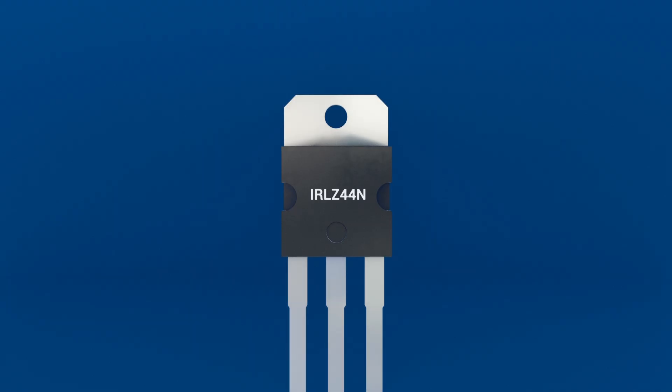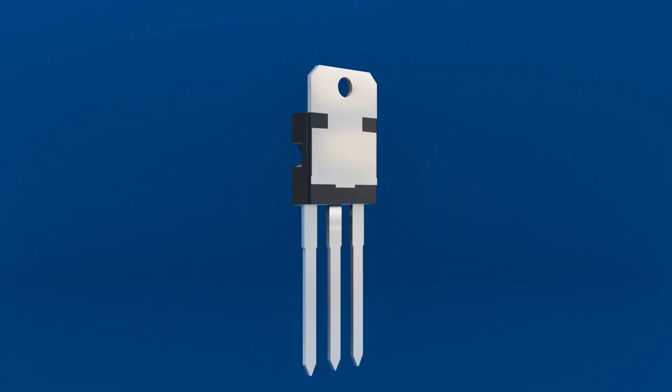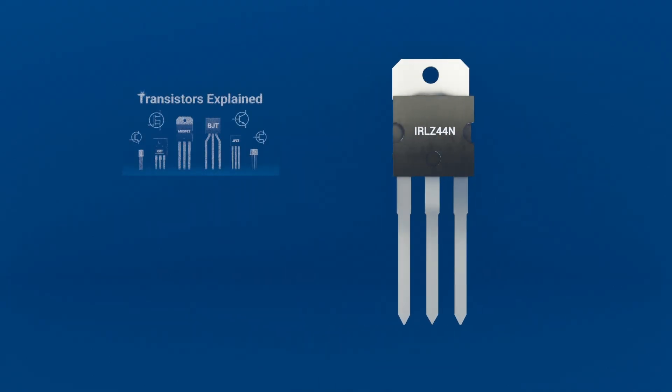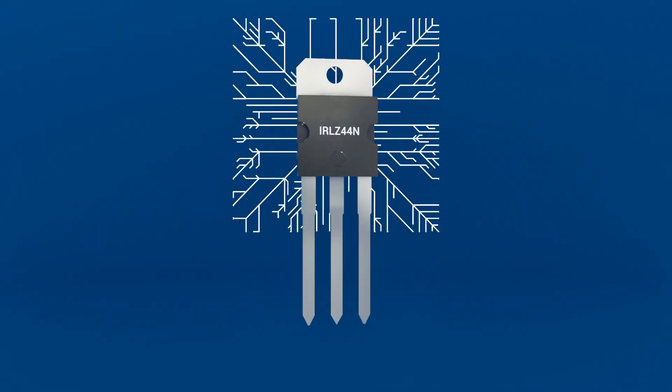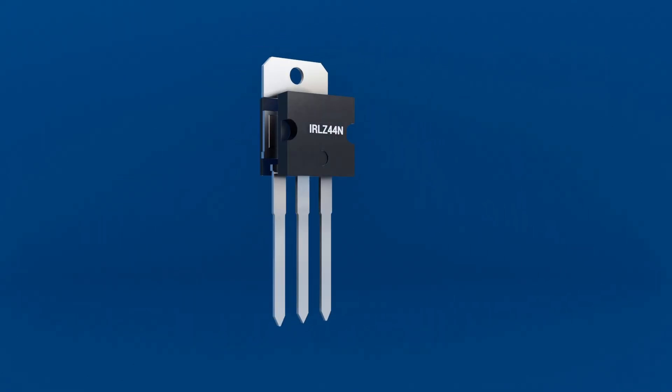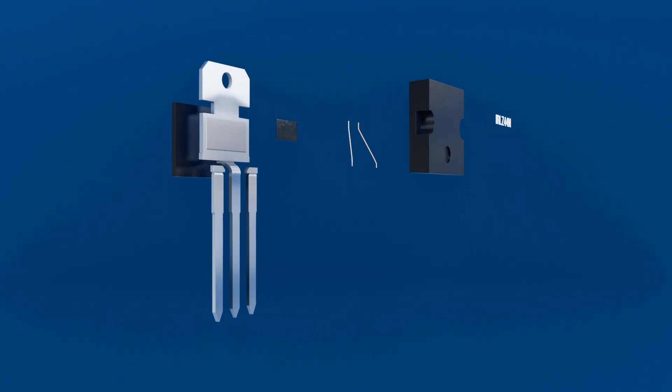Unlike BJTs, which were mainly covered in our previous transistors video, MOSFETs can switch electronic signals faster, use less energy, and are voltage-controlled.